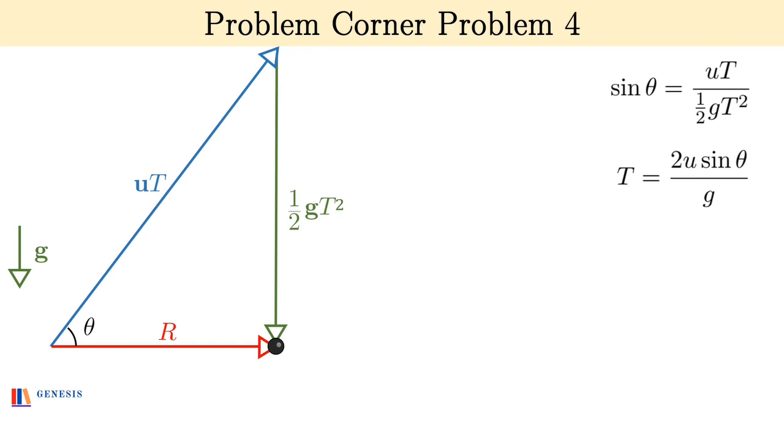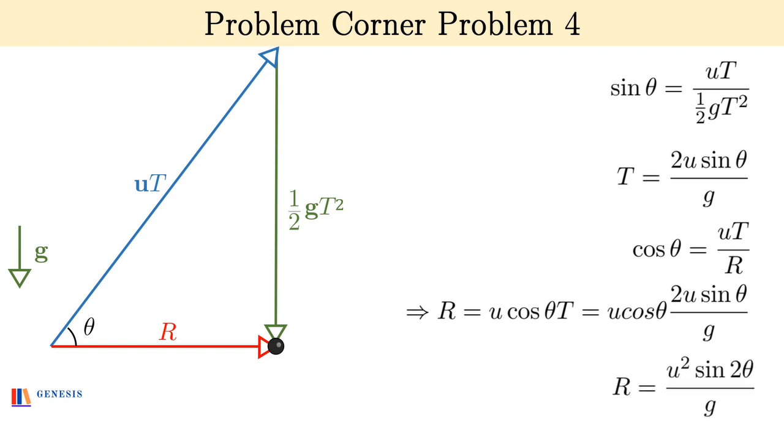Now write cos θ. Cos θ will be base by hypotenuse, and so uT by R, so R = u cos θ·T. Substitute the value of T here and write 2 sin θ cos θ as sin 2θ and you get the standard formula for range: R = u² sin 2θ / g.